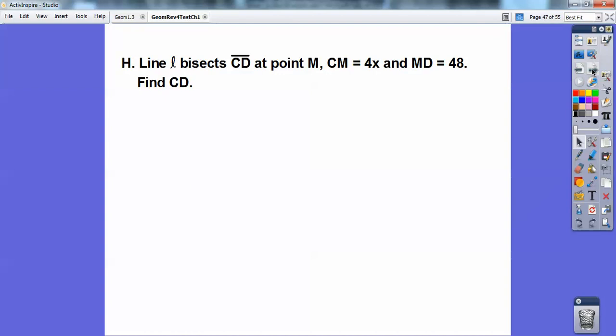So line L bisects. It means it goes through the midpoint at point M. CM equals 4X, and MD equals 48. Find CD. Well, there's two ways to do it. One way is to set them equal to each other and solve for X, but man, you don't need to do that. You already know the length of one piece is 48, so the whole length is going to be twice that, which is going to be 96.